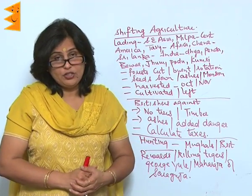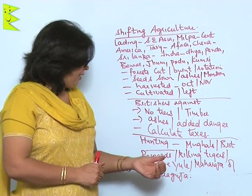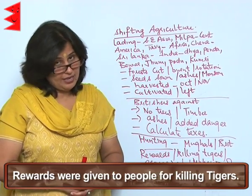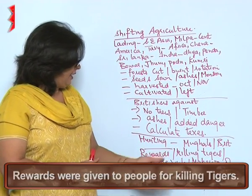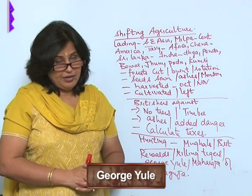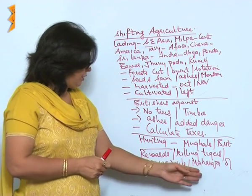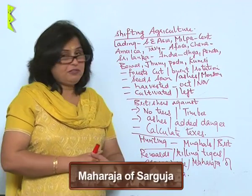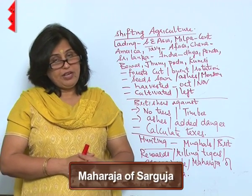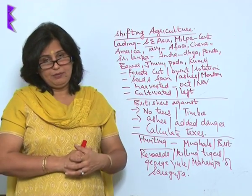The British believed they were doing a great job by hunting animals in India. Rewards were given to people for killing tigers. For example, George Yule, an administrator, killed 400 tigers, and the Maharaja of Sarguja was also very fond of hunting and killed several animals.